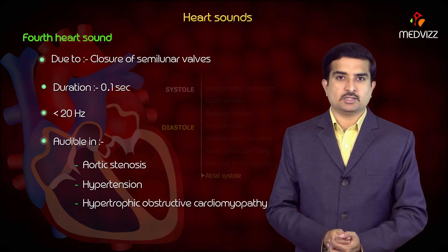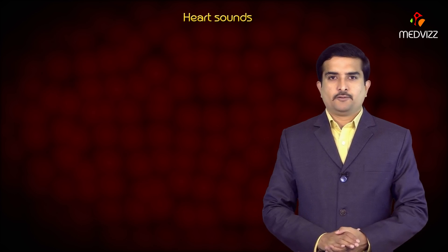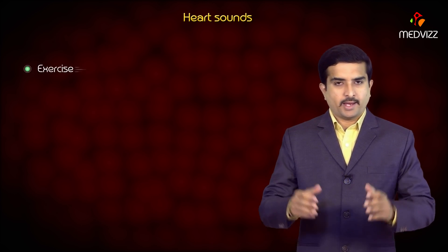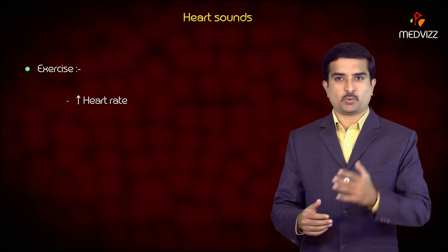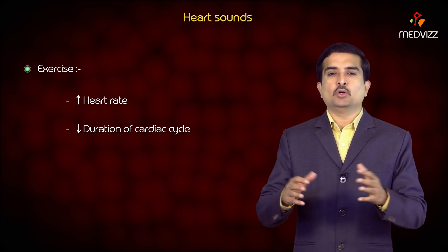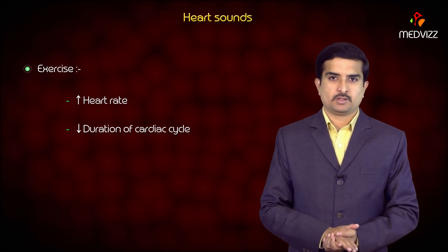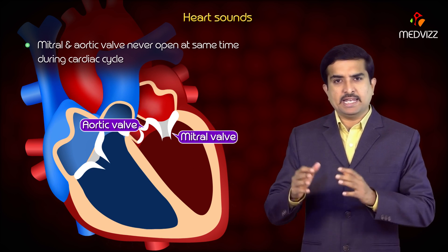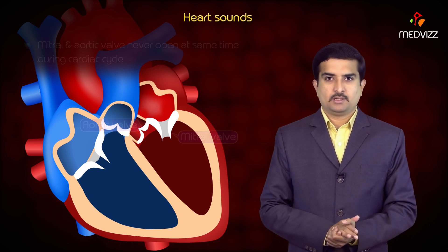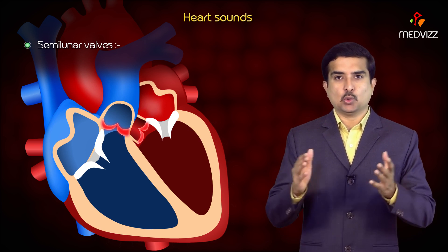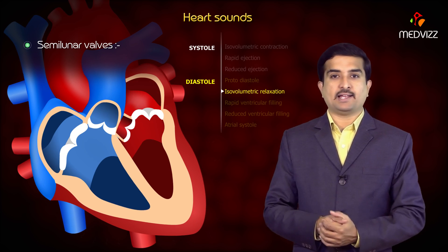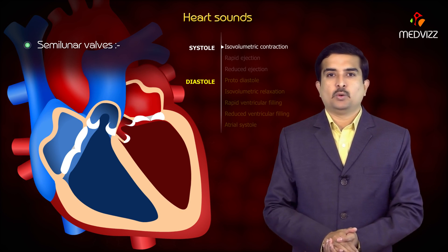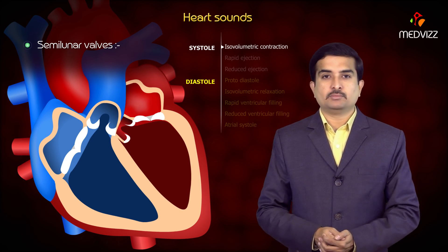Now, a few important high-yield points in cardiovascular physiology. Exercise increases heart rate and decreases the overall duration of the cardiac cycle. During the cardiac cycle, the mitral and aortic valves never open at the same time. Semilunar valves close mainly during isovolumetric relaxation and open during isovolumetric contraction, in both of which the blood volume remains the same.